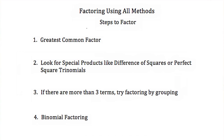The first step is to always look for a greatest common factor. If you have one and you factor it out, what's remaining is usually much easier to factor using the other methods. The next step is to look for special products like difference of squares or perfect square trinomials. If you can recognize a polynomial as one of these, factoring becomes very easy — you just plug it into the formula.